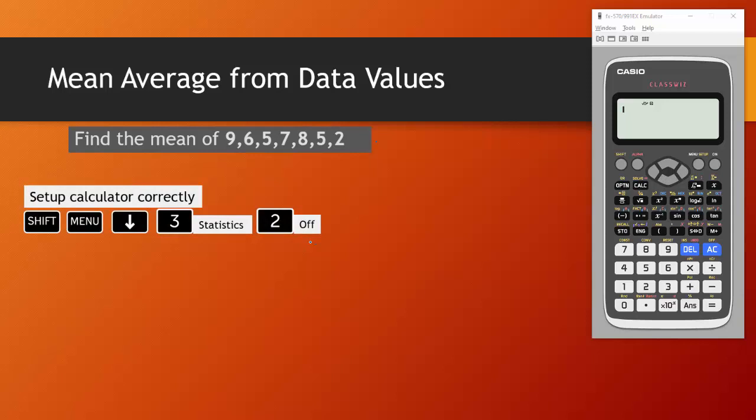First we need to make sure our calculator is set up in the correct mode. To do this you're going to press shift and menu which will take you into this setup screen. You'll scroll down by pressing the down arrow to number three which is statistics. Press number three to get there and it's asking you about frequency whether you want it on or off. If we're finding the average of just individual values we want to turn this off. So press two.